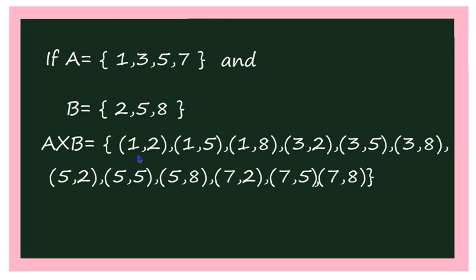While representing, it is very important that after every pair of elements you separate them by a comma, because when writing the elements of a set you separate by comma. A cross B itself is a set, and each element like (1, 2) or (1, 5) is itself an element of that set.